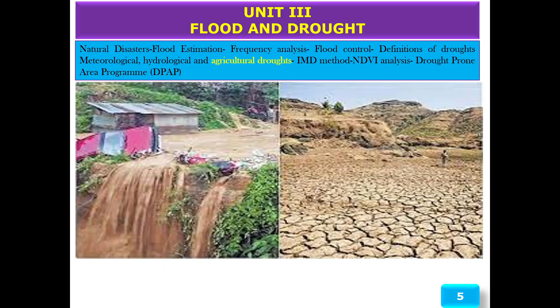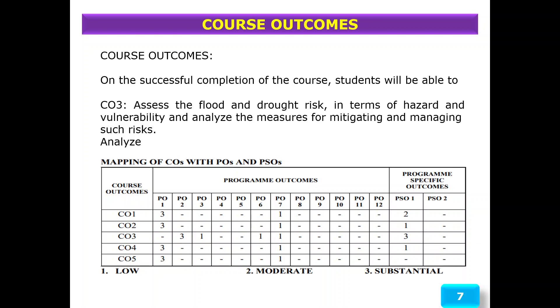Good morning. Today we are going to discuss Unit 3: Flood and Drought, specifically agricultural drought. Upon successful completion of this course, students will be able to assess flood and drought risk in terms of hazards and vulnerability, and analyze measures for mitigating and managing such risk. The course outcome of this topic correlates with program outcomes 2, 3, 6, 7, and program specific outcome 1.